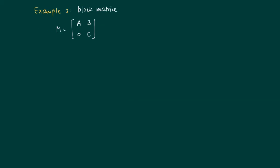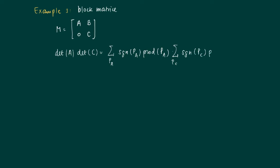The following example looks at a block matrix, where M is partitioned into four parts, and A and C are square matrices. If these are square matrices, then we can compute the determinant of A and the determinant of C. The determinant of M involves summing over all patterns for A and the sign of those patterns times the product of the pattern, times the sign of pattern P_C for matrix C, times the product of P_C. These are the only possibly non-zero patterns for the matrix M.